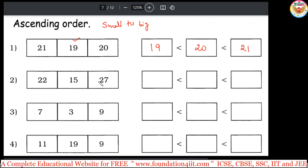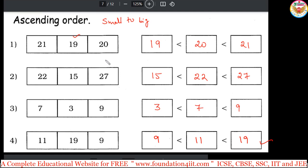22, 15, 27, small one is 15, right here. 22, 27, in between both 22 and 27, 22 is the small, next to 27. 7, 3, 9, so 3, 7, 9, this way you can make it. Next, 11, 19, 9, so 9, next we have 11 and 19. This is the way. Small to big ascending order should write. Some pages you have the descending order, big to small you need to do it.